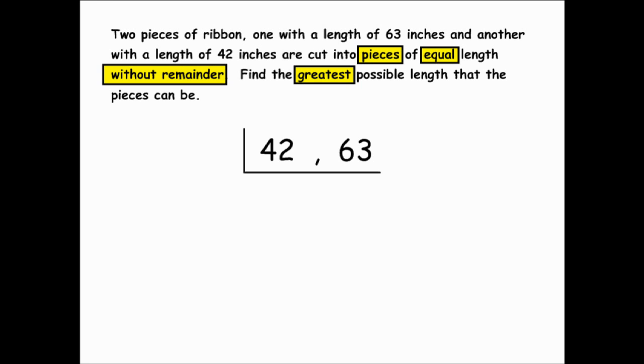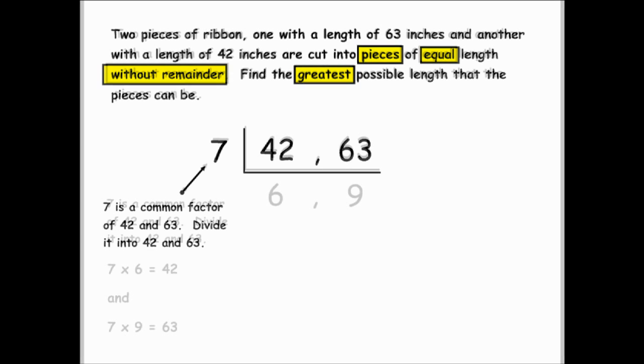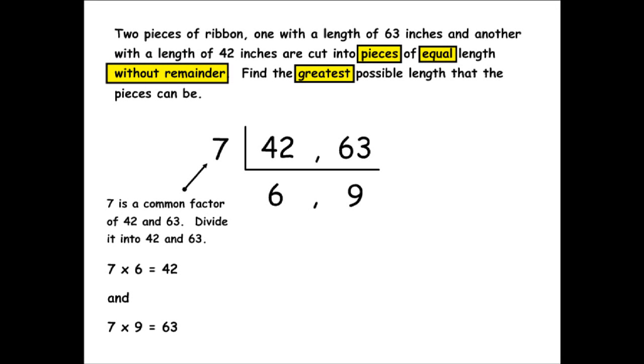7 is a common factor of 42 and 63. So we are going to divide 7 into 42 and 63. 7 can be divided into 42 6 equal times, and 7 can be divided into 63 9 equal times.